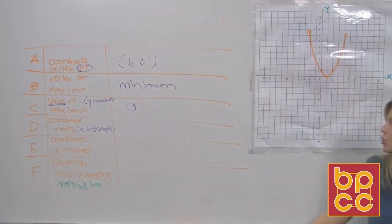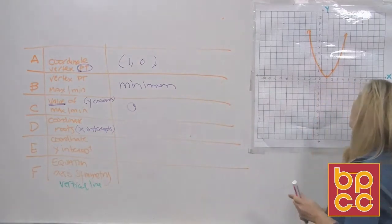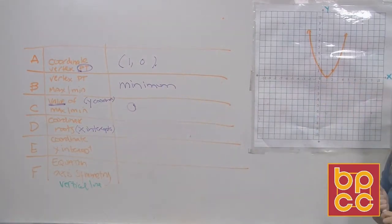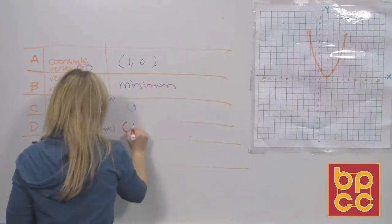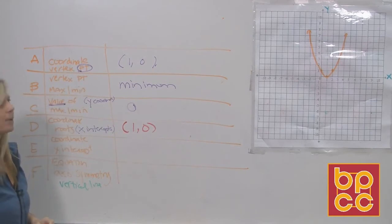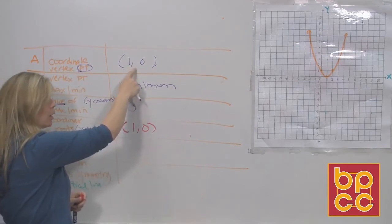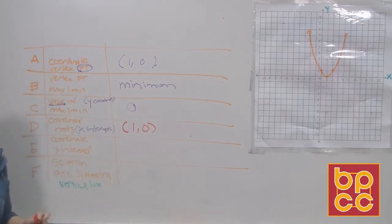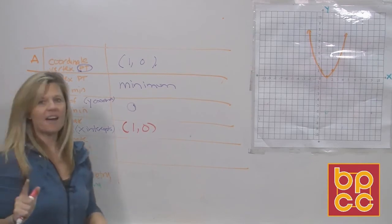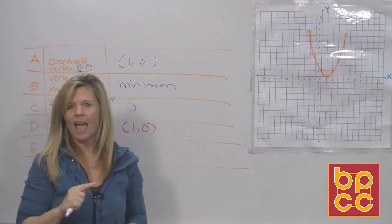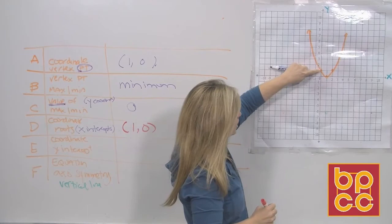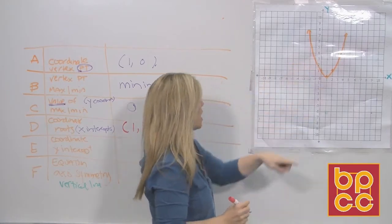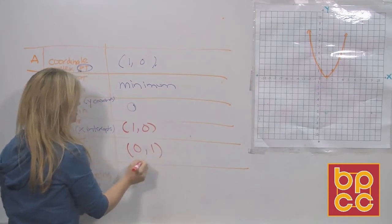Now we're going to do the roots — another word for roots is x-intercepts. Looking closely at this parabola, it only touches the x-axis once, right here. So this parabola has one real root, and to name it as a point, that's (1, 0). That point is double dipping — it is both the vertex point and the x-intercept. For the y-intercept, every parabola is going to touch the y-axis. That point's x value is 0 and its y value is 1, so the y-intercept is at (0, 1).